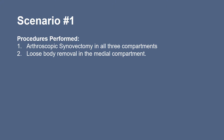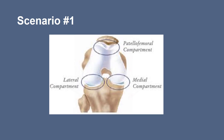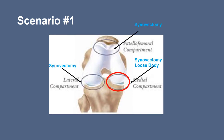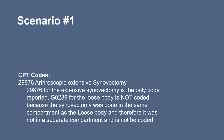In scenario one, an arthroscopic synovectomy is done in all three compartments as well as a loose body removal in the medial compartment. You can see where the synovectomy is done in all three compartments and the loose body is removed in the medial compartment. 29876 arthroscopic extensive synovectomy is the only code reported. G0289 for the loose body is not coded because the synovectomy was done in the same compartment — therefore it was not a separate compartment.